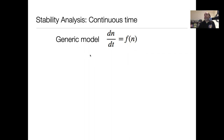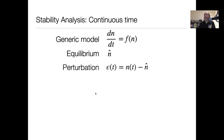Are our equilibria stable or not? Let's think about our generic continuous time model, which is dn/dt equals some function of n, the current population. We're going to assume that we've already solved for the equilibrium n-hat, and we're going to think about this in terms of some perturbation. We want to measure epsilon at time t, which is the difference between the population and its equilibrium, and we're going to assume that these perturbations are relatively small.